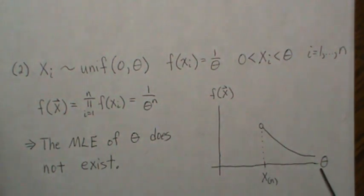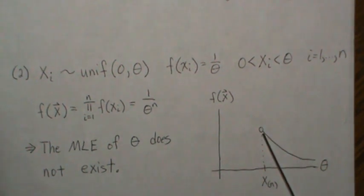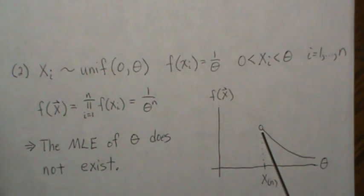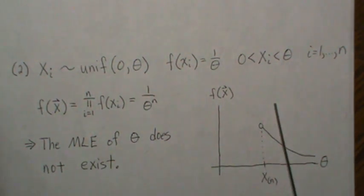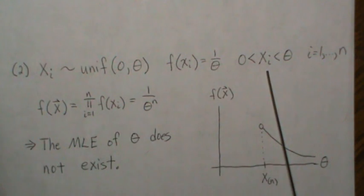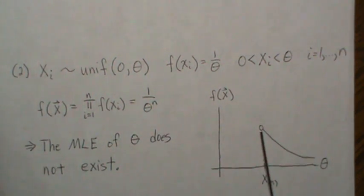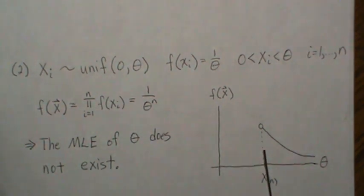So when we plot our likelihood, remember we're trying to find a maximum likelihood estimator. So for different values of theta that's along here, it goes up, goes up, goes up, and then it can never equal or go past the largest value.